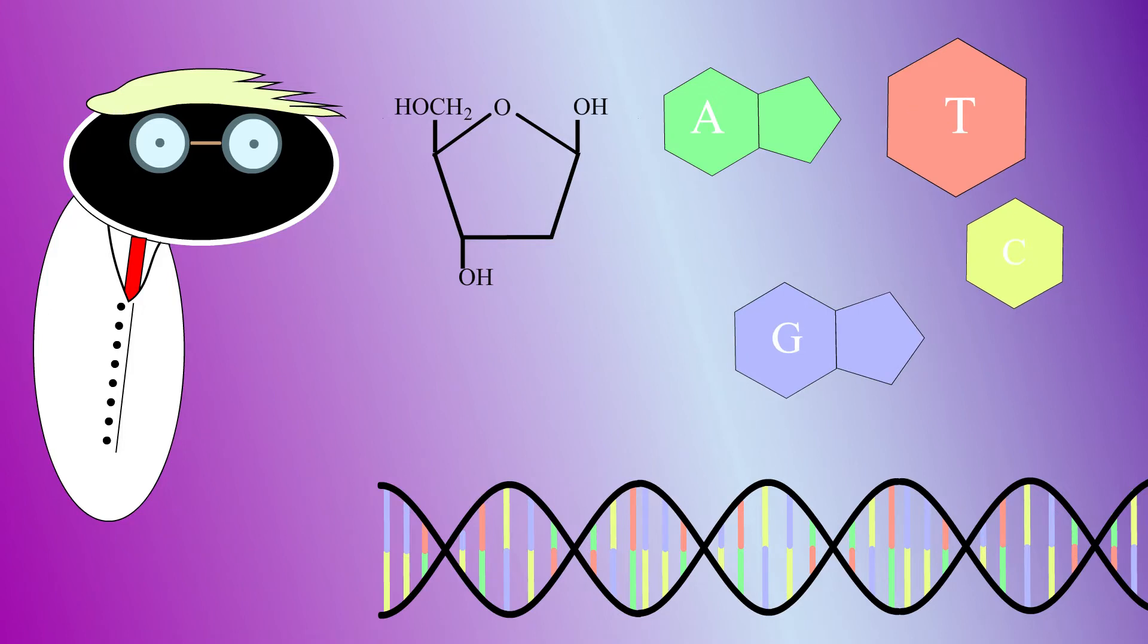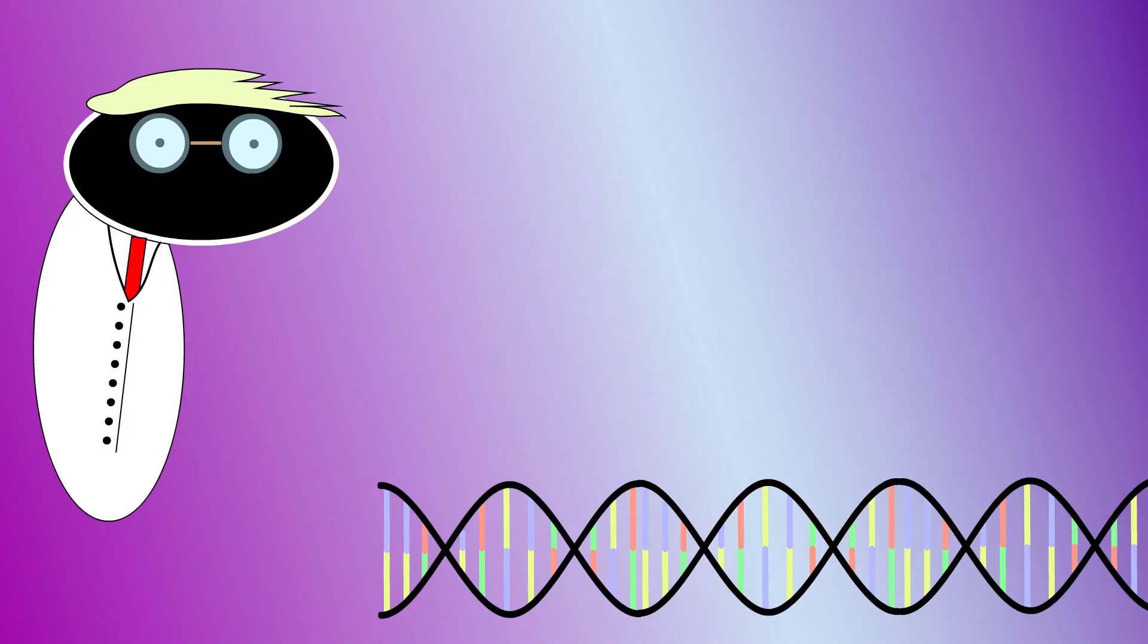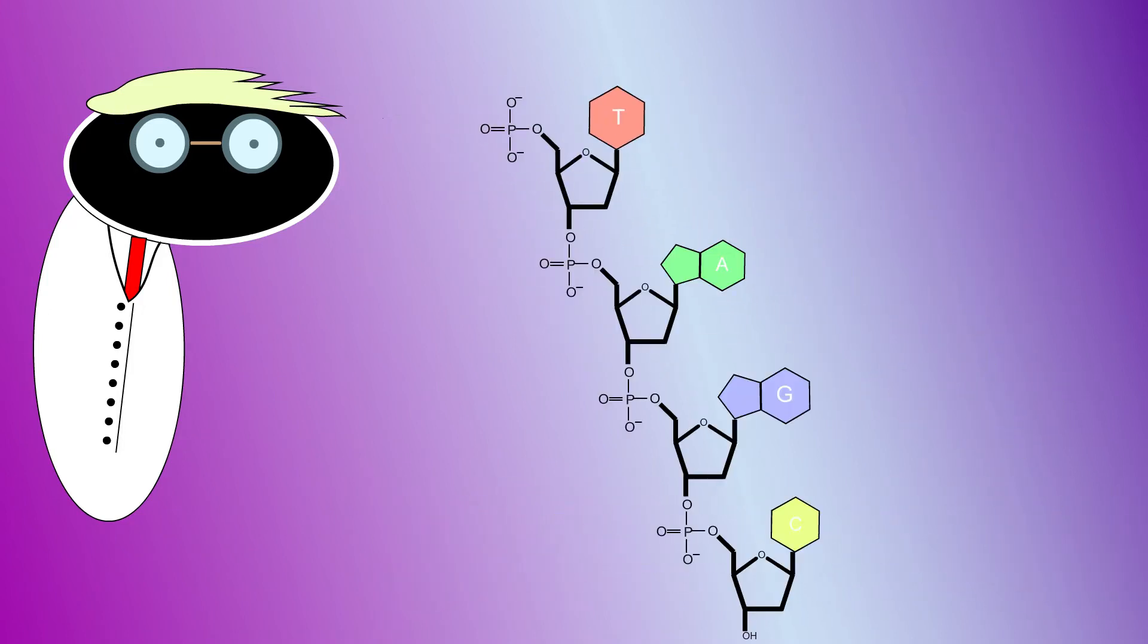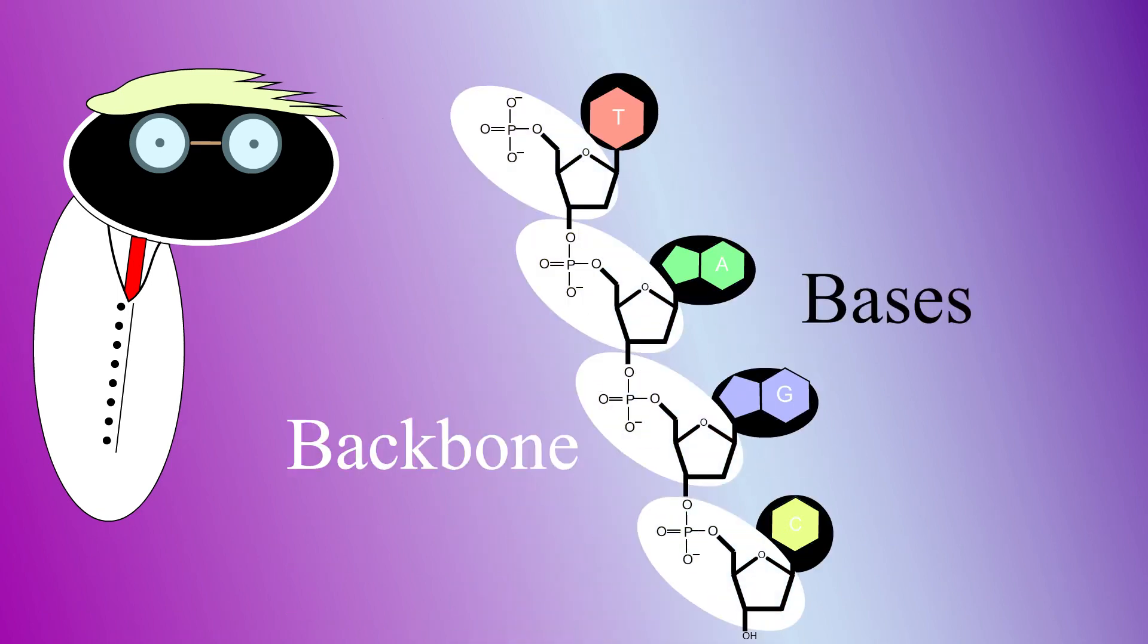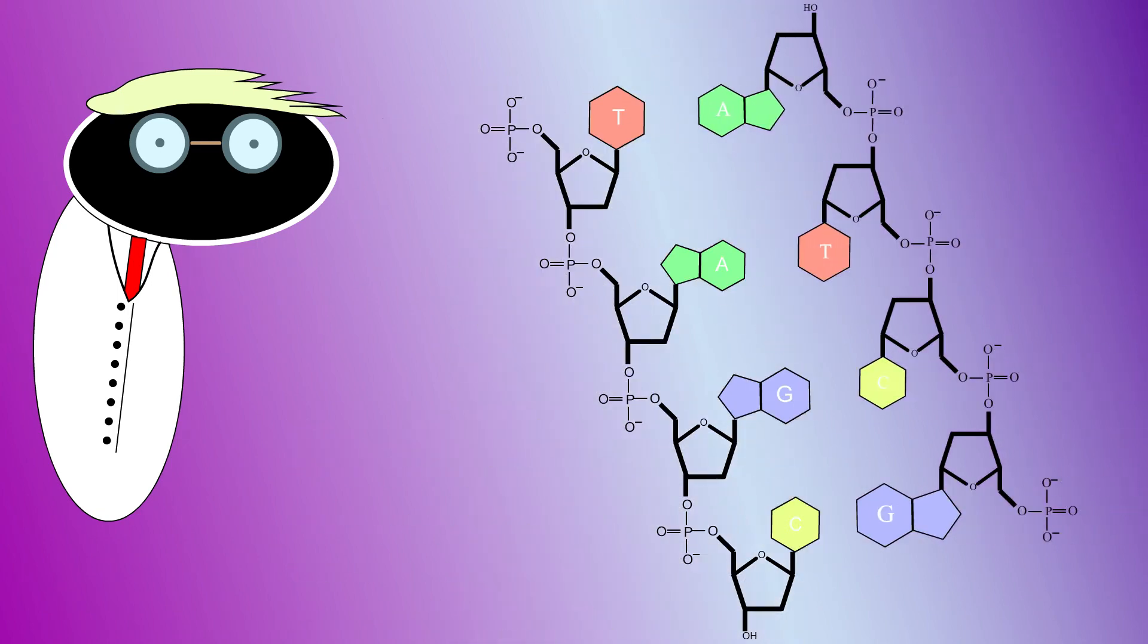These form what he called a nucleotide. The phosphate and sugar formed a consistent backbone, while the base changed. But he only had half the picture.